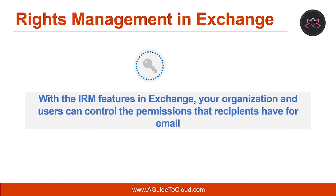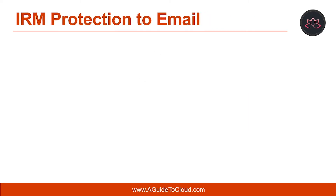What are the limitations of IRM in Exchange? You can't limit third-party screen capture programs or photographing IRM-protected content displayed on the screen, and users remembering or manually transcribing the information. By default, an Exchange organization is enabled for IRM. But to apply IRM-protected messages, you need to use one of these methods. First, users can apply IRM to messages in Outlook by using AD RMS rights policy templates available to them. This process uses the IRM functionality in Outlook, not Exchange.